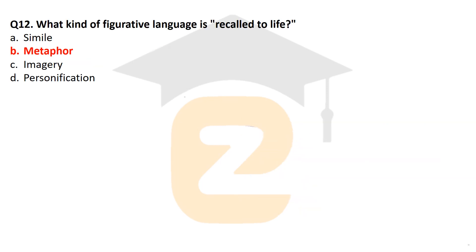The next question: what kind of figurative language is 'Recall to Life'? It belongs to metaphor. 'Recall to Life' is the first part of the novel A Tale of Two Cities. The novel is divided into three parts: the first is 'Recall to Life,' the second is 'The Golden Thread,' and the third is 'The Track of a Storm.'